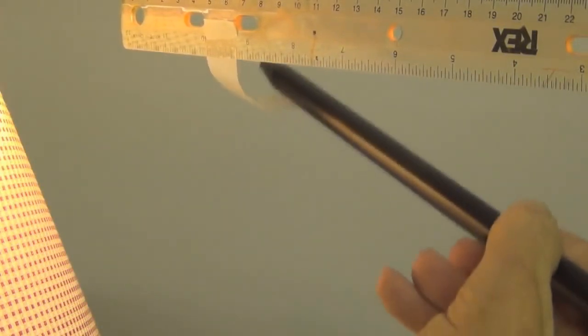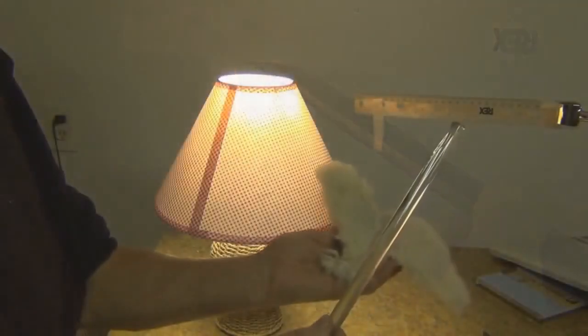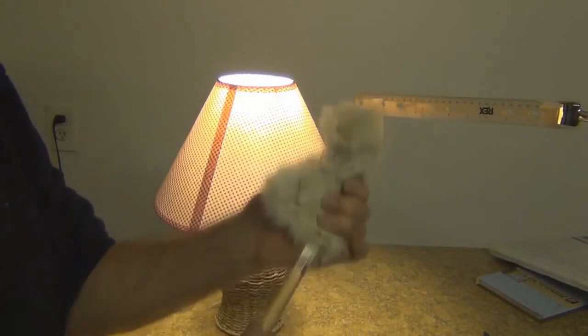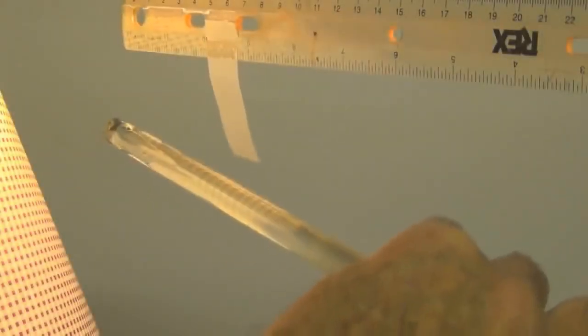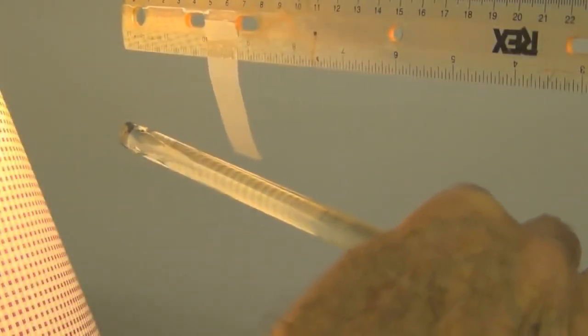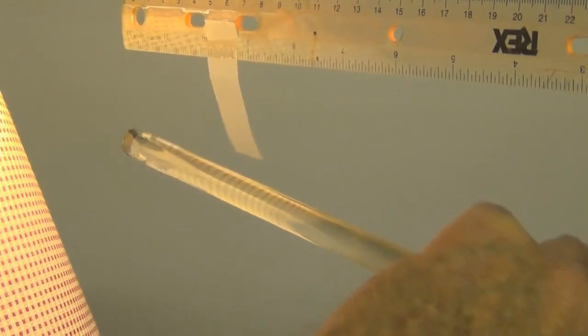That makes the tape positive, since unlike charges attract. To confirm this, we charge up a glass rod and hold it up to the tape, and we find that the positive glass rod repels the tape. That means that, for sure, the tape is charged positively, since like charges repel.